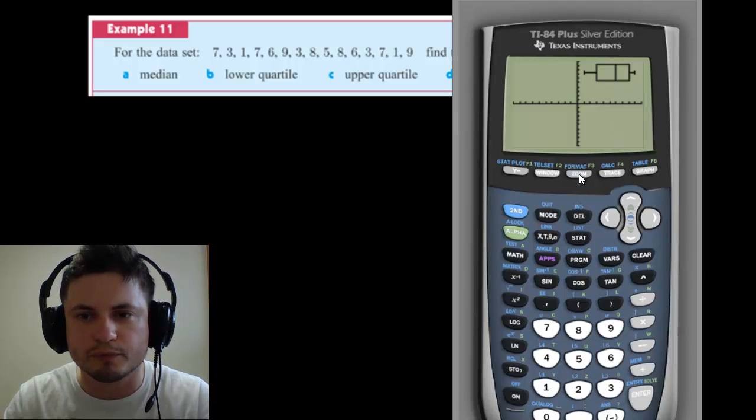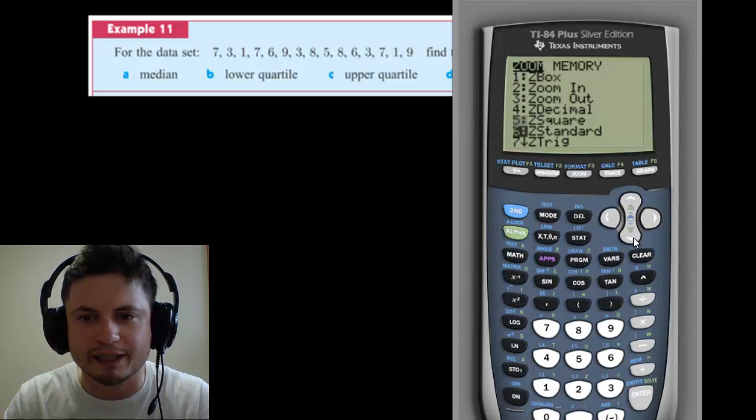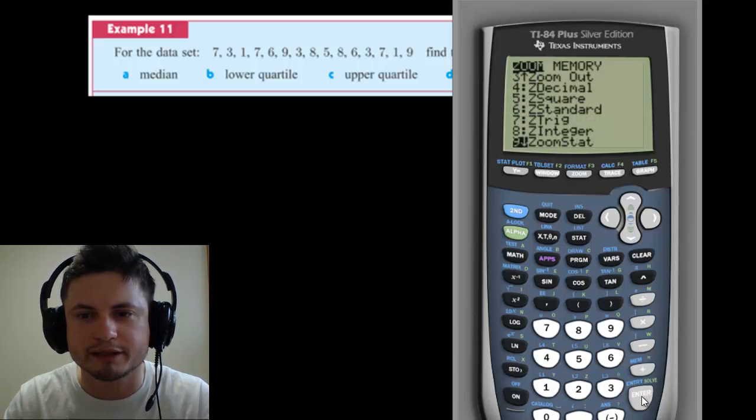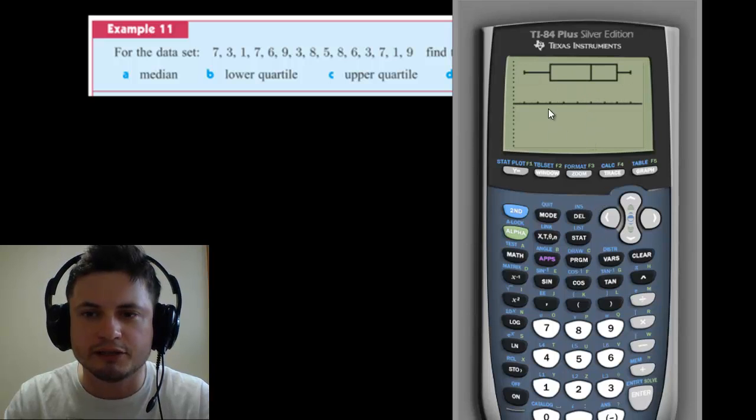If you click on zoom, and you scroll down to number nine, number nine is called zoom stat. And this is an automatically selected zoom for basically for statistics. And this will make your plot much, much better looking.